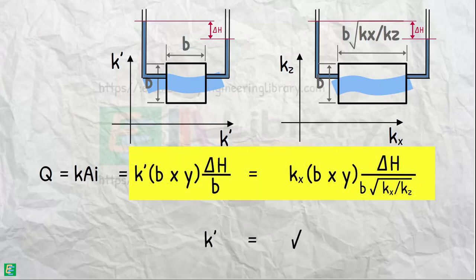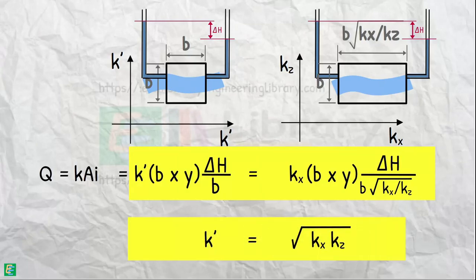Solving this, we get the effective coefficient of permeability applicable for our transformed section.